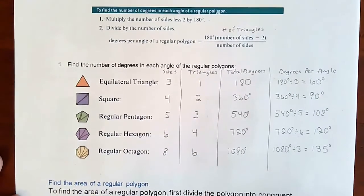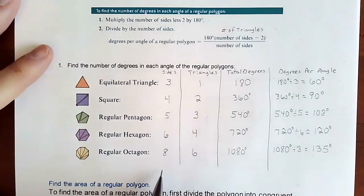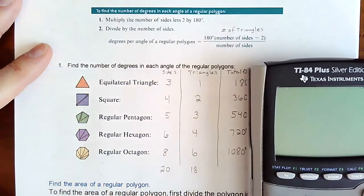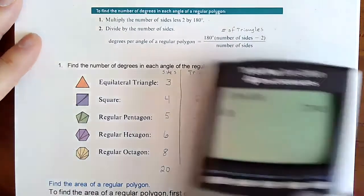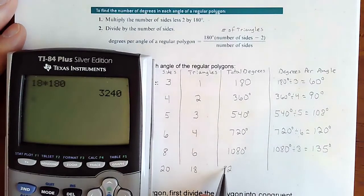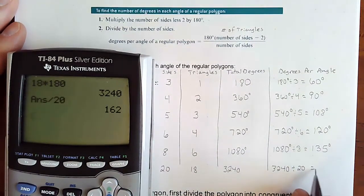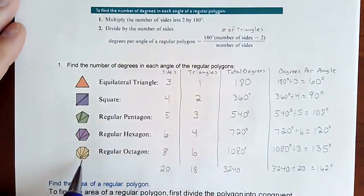It doesn't matter how many sides you have. If you have 20 sides, you take 20 minus 2, giving you 18 triangles. Multiply 18 by 180, which gives you 3,240. Then divide by the number of angles — 20 — and you get 162 degrees per angle. The more sides you have, the bigger the angles need to be to open up and connect all those sides all the way around.